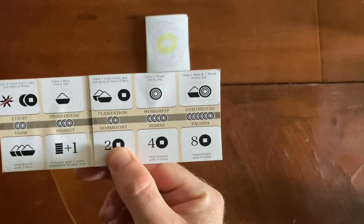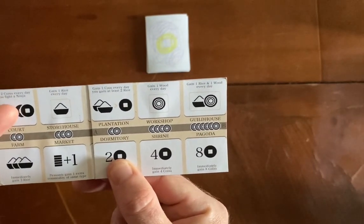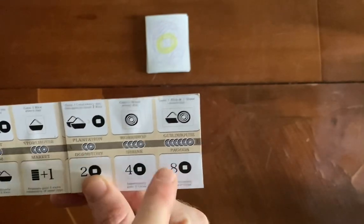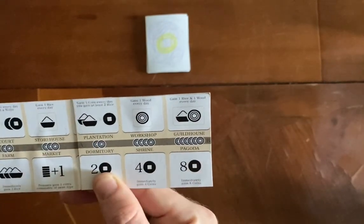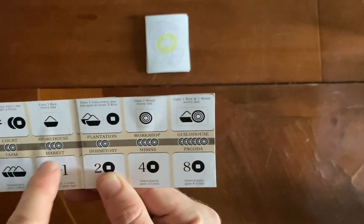Some of these buildings, like the court, will gain two coins every day you fight a ninja. The workshop gives you one wood every day. The pagoda gives you eight coins immediately. And these cost six wood, four wood, two wood, three wood, two wood.